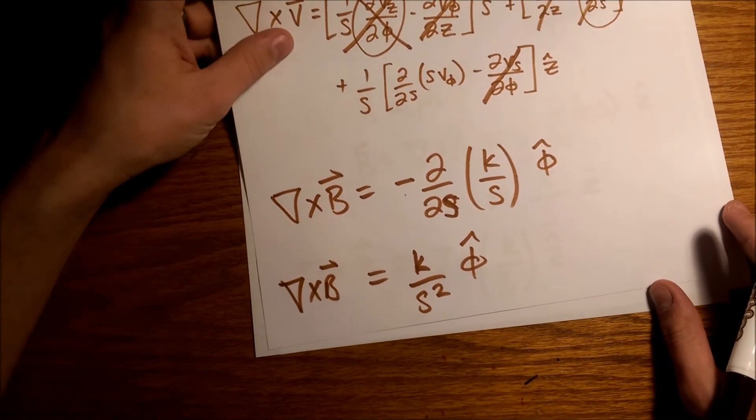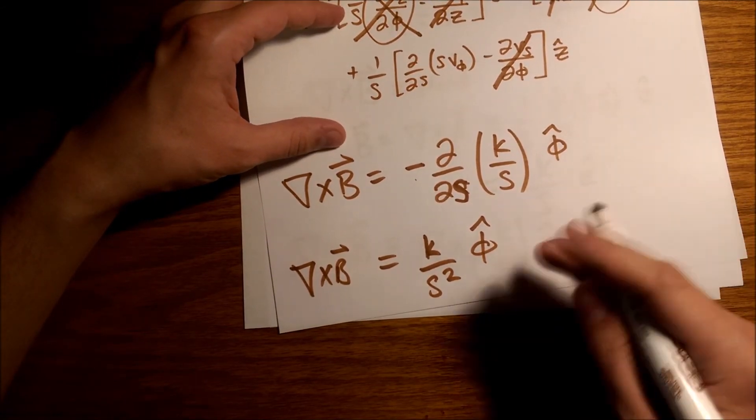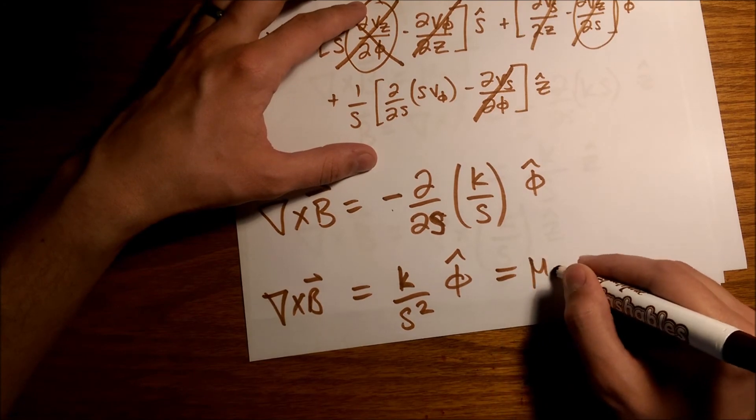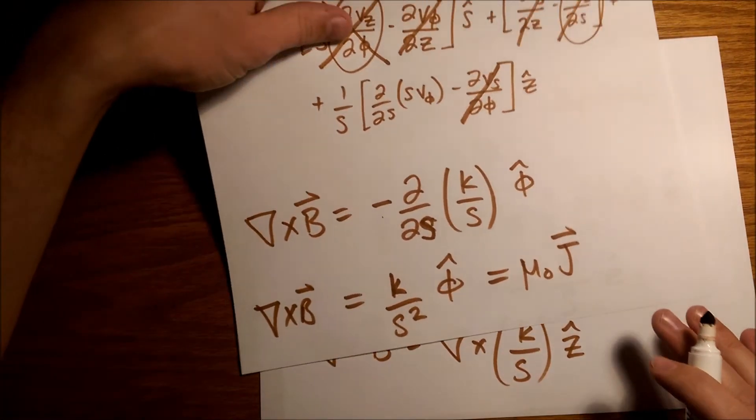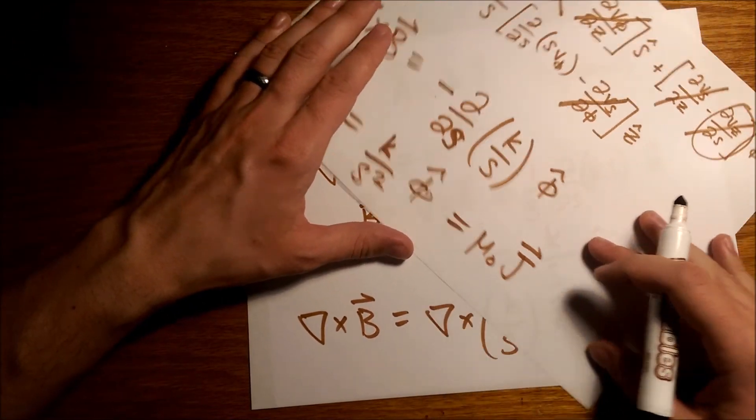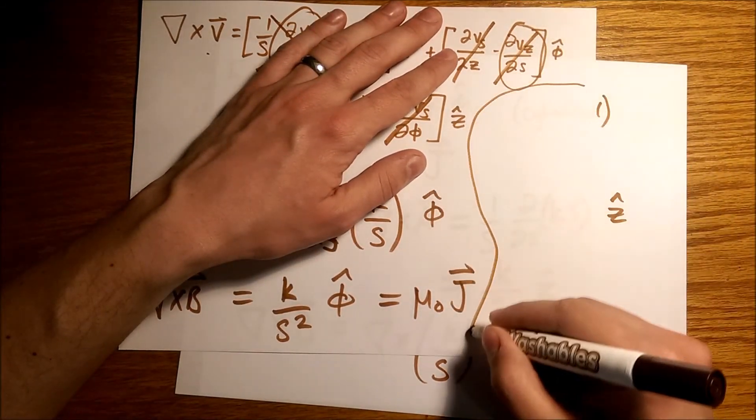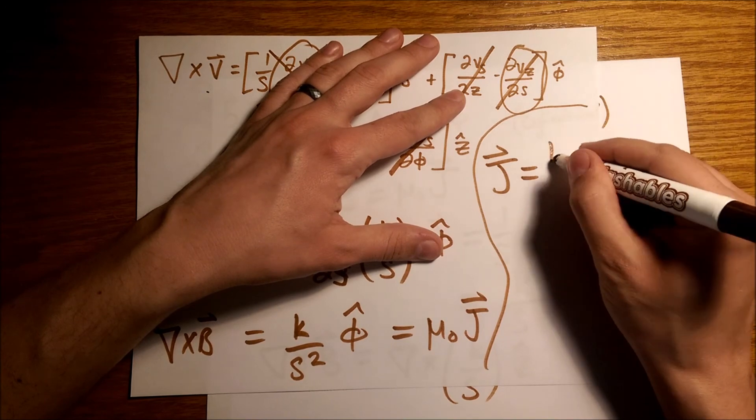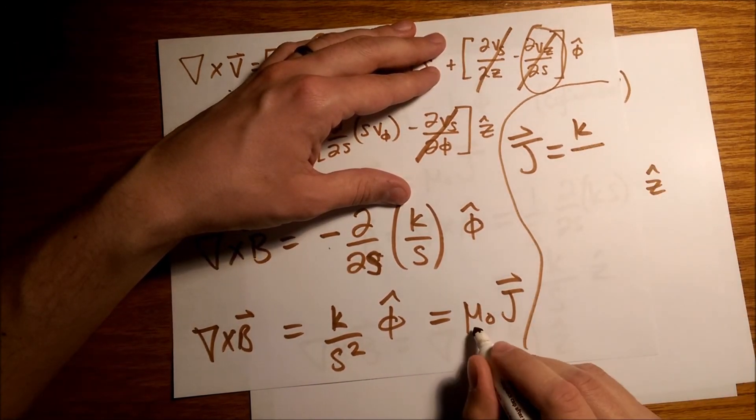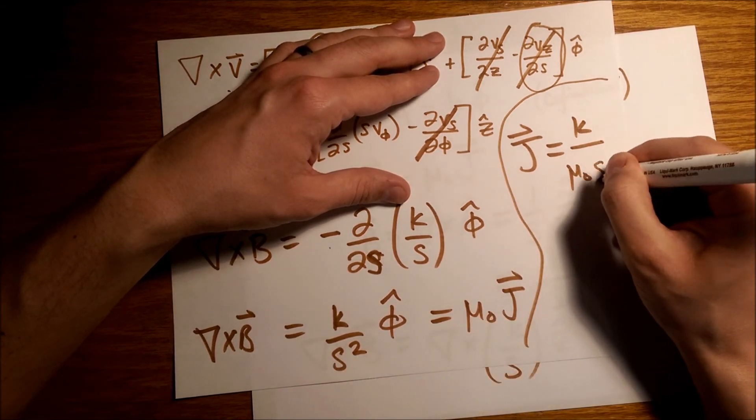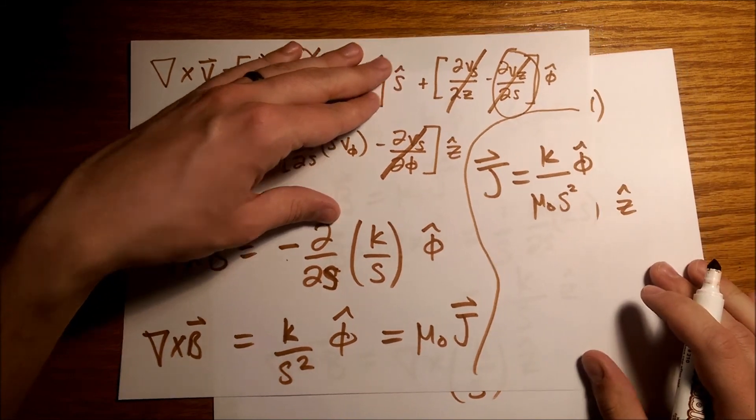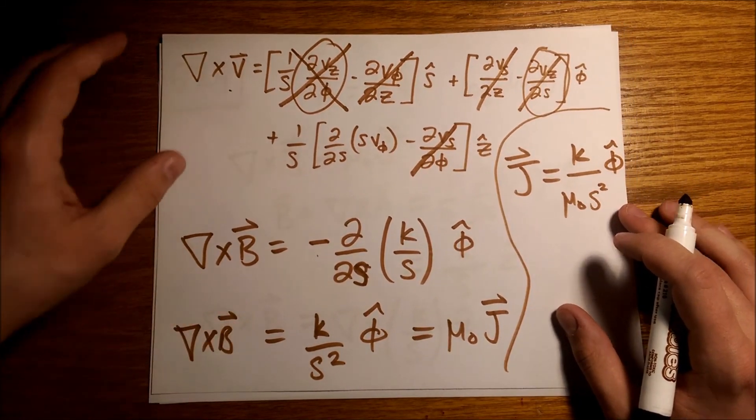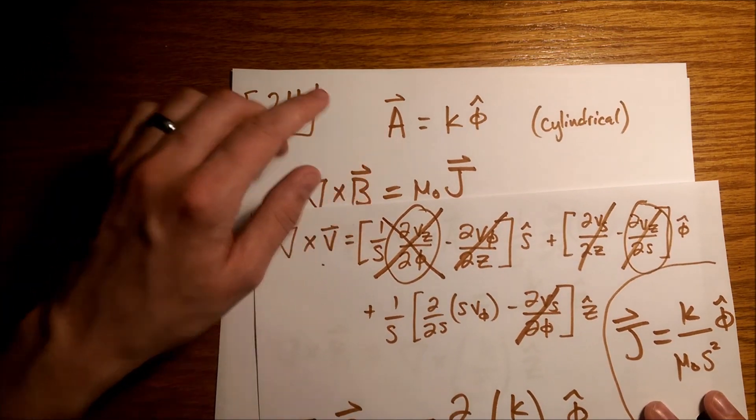Del cross B is equal to this, and we're almost done. Now, all we have to do is remember that what we were actually after was the current distribution, or the current density. Alright, so remember that del cross B is equal to mu knot j, and this j is actually the droid that we're looking for. So we have our k, and we have our mu knot is going to divide over, and our s squared, and then we have our phi hat unit vector. And then this is the current distribution that will give rise to this vector potential that we wanted in the beginning.